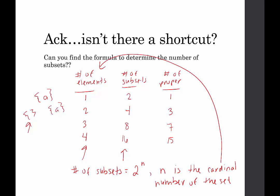How do we determine the number of proper subsets? The number of proper subsets is always one fewer than the number of subsets. So for proper subsets, we take two to the n and subtract one. Be careful here: you need to compute two to the n first, then subtract one. Don't use n minus one as your exponent, because that won't give you the right number — it will short the count of proper subsets.